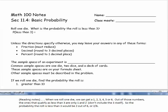Section 11.4 covers basic probability. If we roll one die, what's the probability that the roll is less than 3?